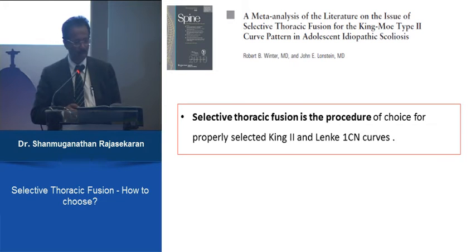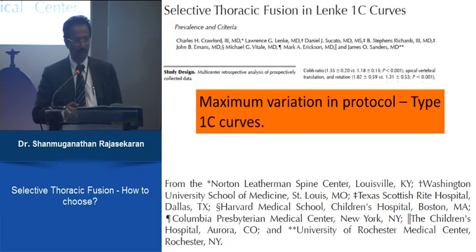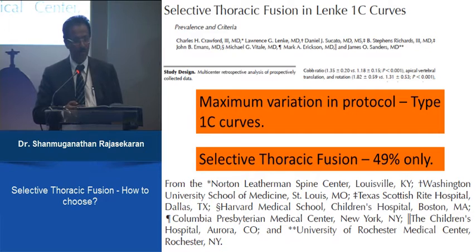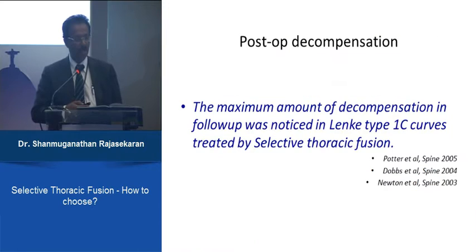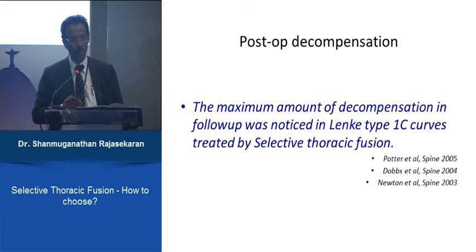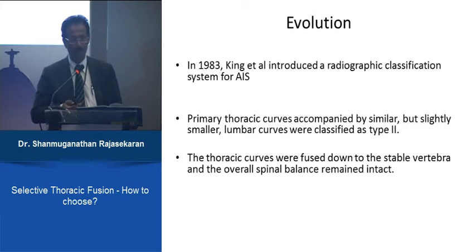There are publications showing selective thoracic fusion is the procedure of choice for properly selected King 2 and Lenke 1C curves, but other publications show maximum variation in protocol. Many surgeons are divided, and selective thoracic fusion was performed in only 49% of patients in one series. The maximum amount of decompensation in follow-up was noticed in Lenke 1C curves treated by selective thoracic fusion, indicating significant uncertainty and risk of decompensation with improper patient selection.